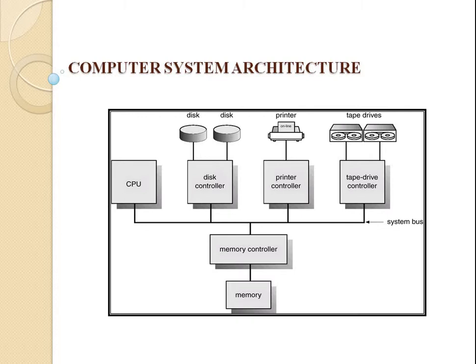A general purpose computer system consists of one or more CPUs and a number of device controllers connected through a common bus that provides access to shared memory. Each device controller is in charge of a specific type of device, for example disk drives, audio devices, and video displays. The CPU and the device controllers can execute concurrently.